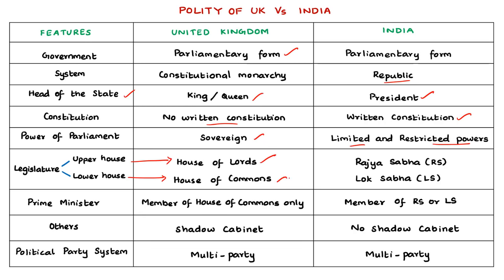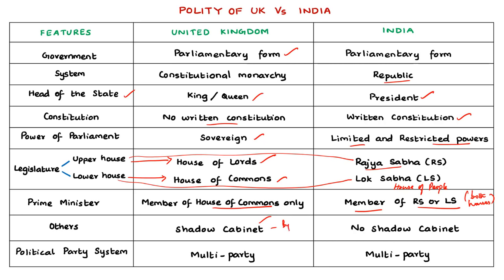In India, the upper house is the Rajya Sabha or Council of States, and the lower house is the Lok Sabha or House of the People. The Prime Minister of UK must be a member of only the House of Commons, whereas in India the Prime Minister may be a member of either the Lok Sabha or Rajya Sabha. UK also has a system of shadow cabinet — a cabinet formed by opposition parties — which is a unique practice in the British Parliament intended to prepare members for future ministerial office. India has no such system.